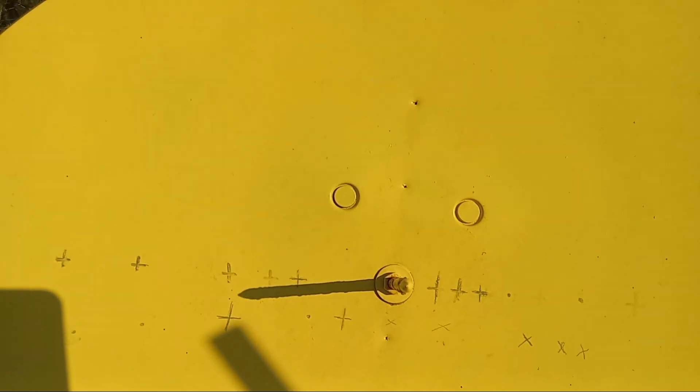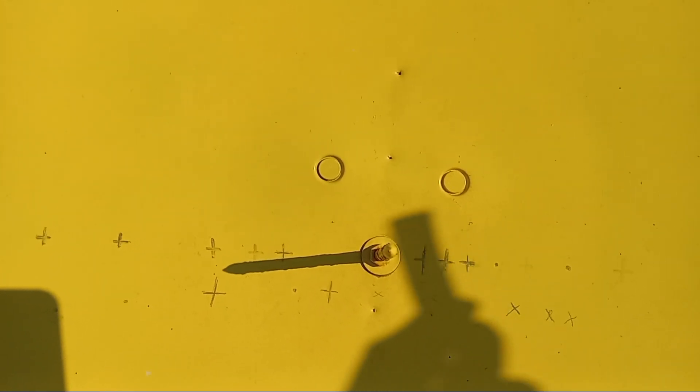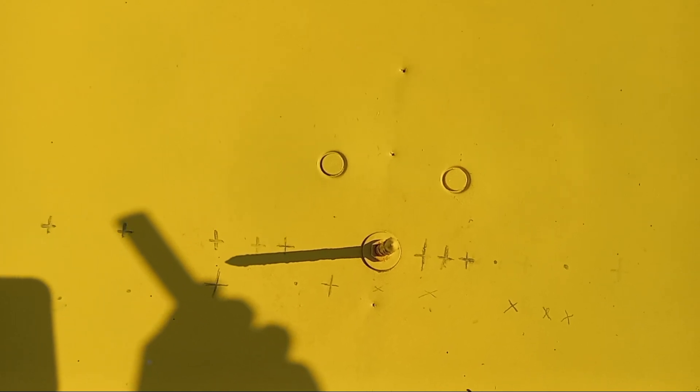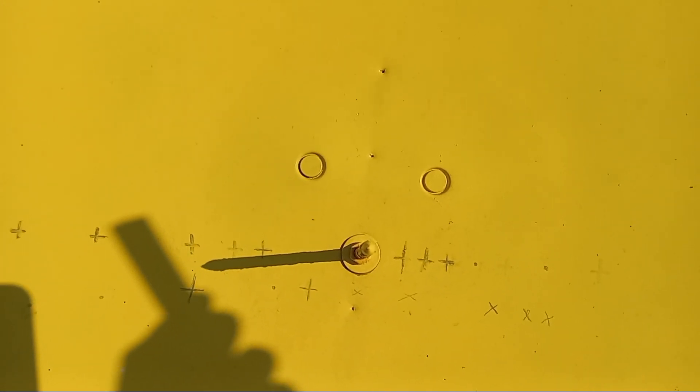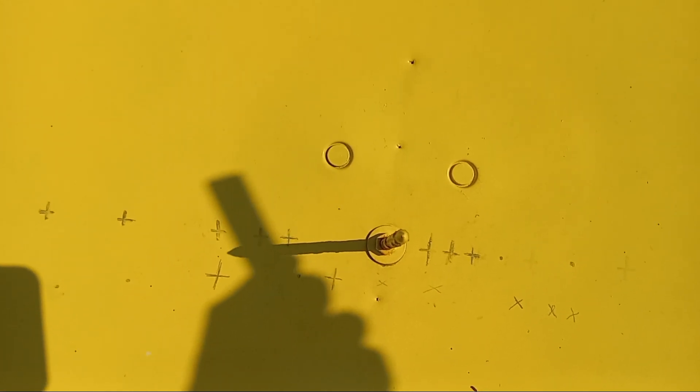You see that line going across there, that's the equator line on March the 20th. That shadow tracked that line. Now, once it gets above this line, it'll be in the third gate, and we'll be in fall.